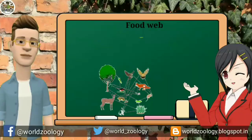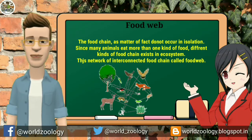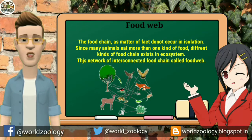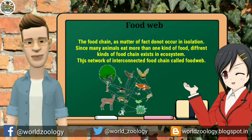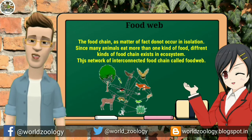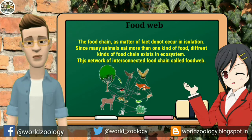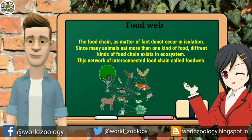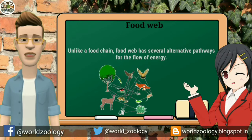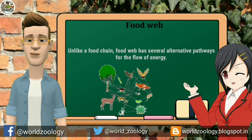Food web: food chains as a matter of fact do not occur in isolation. Since many animals eat more than one kind of food, many food chains exist in an ecosystem. This network of interconnected food chains is called a food web. Thus a food web may be defined as the network of a number of food chains existing in an ecosystem. Unlike a food chain, a food web has several alternative pathways for the flow of energy.